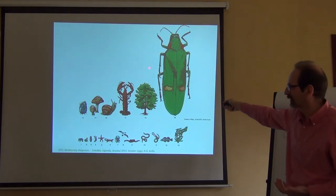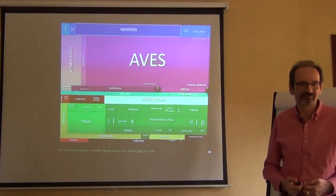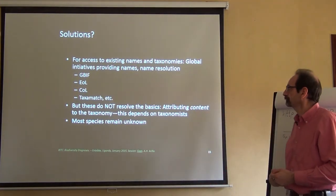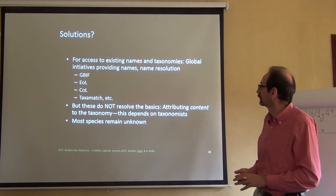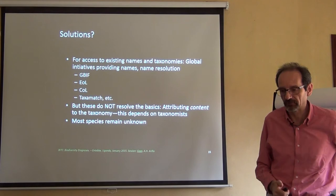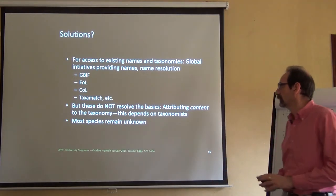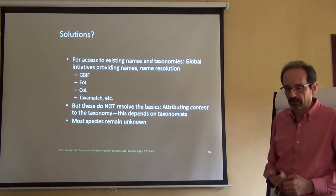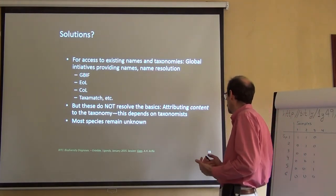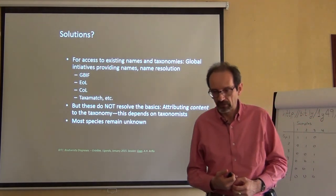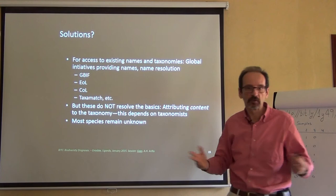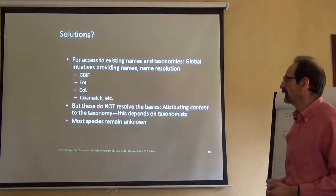We should know a lot about insects and plants, but we do know a lot about birds. Sorry. But this is what it is, thanks to the work of ornithologists. Which solutions do we have? Okay, we might resort to names and taxonomies, global initiatives that will provide us with names, which might provide us with name resolution, as we did in just this exercise. We can go to GBIF, we can go to Encyclopedia of Life, to Catalog of Life, TaxaMatch, and other tools that will help us finding species names, but they will not resolve the very basics of the thing. We need to attribute content to the taxonomy, and that will always depend on taxonomists. We're back to the taxonomical impediment. We don't have taxonomists. This up there will come to nothing eventually.